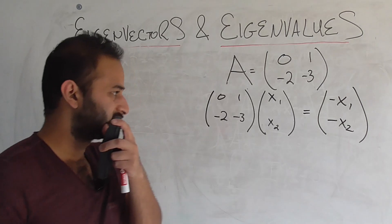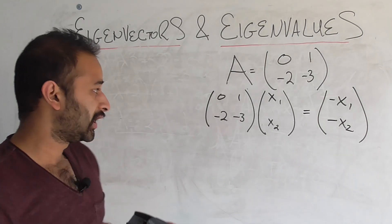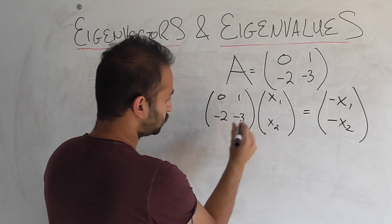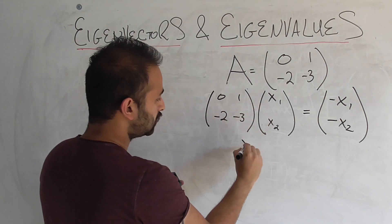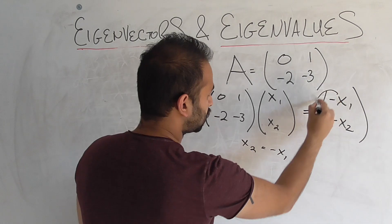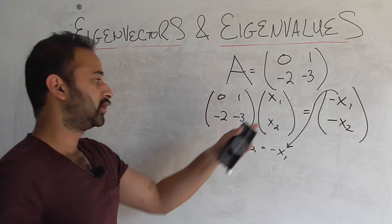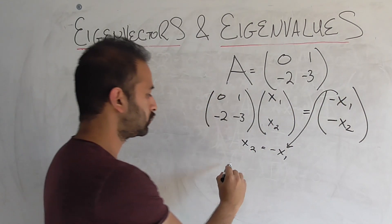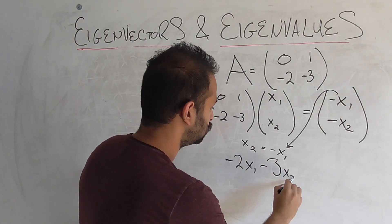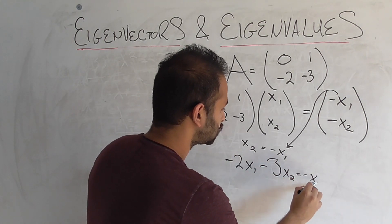Now this is pretty trivial. It's just solving a system of equations. And since there's a 0 in here, it'll be even easier. So our system of equations becomes, the first equation is just x2 equals minus x1. So the minus x1 comes from here. And the second equation is negative 2x1 minus 3x2 equals minus x2.